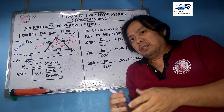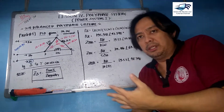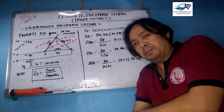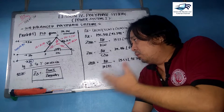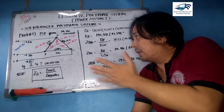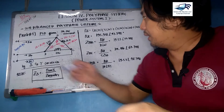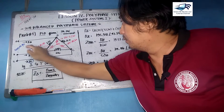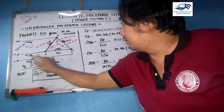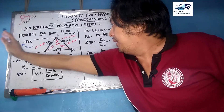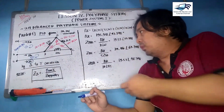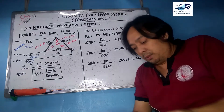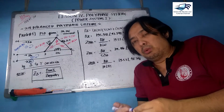We have two solutions, but I will present the shortest one. The first solution uses mesh analysis — you set up mesh number one and two, with the Y-connected source, then get IA, IB, and IC using mesh analysis. That is a more rigorous approach.